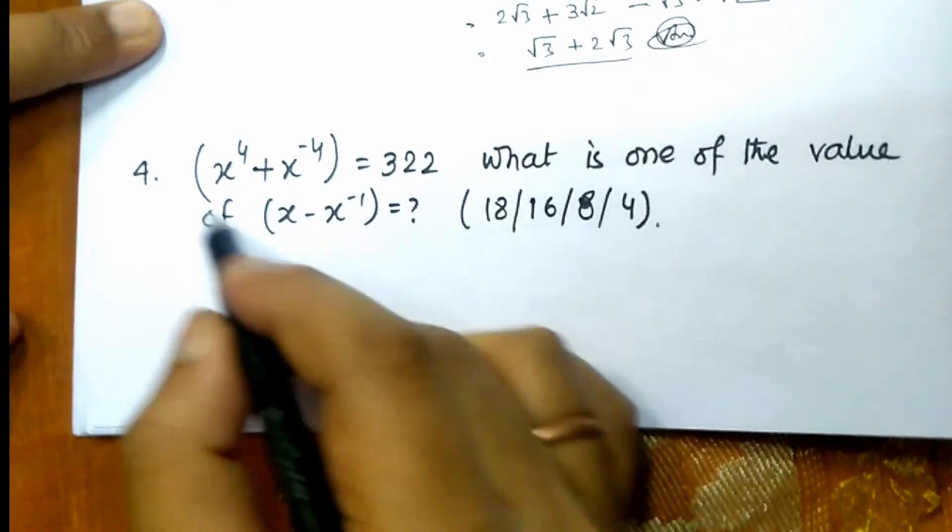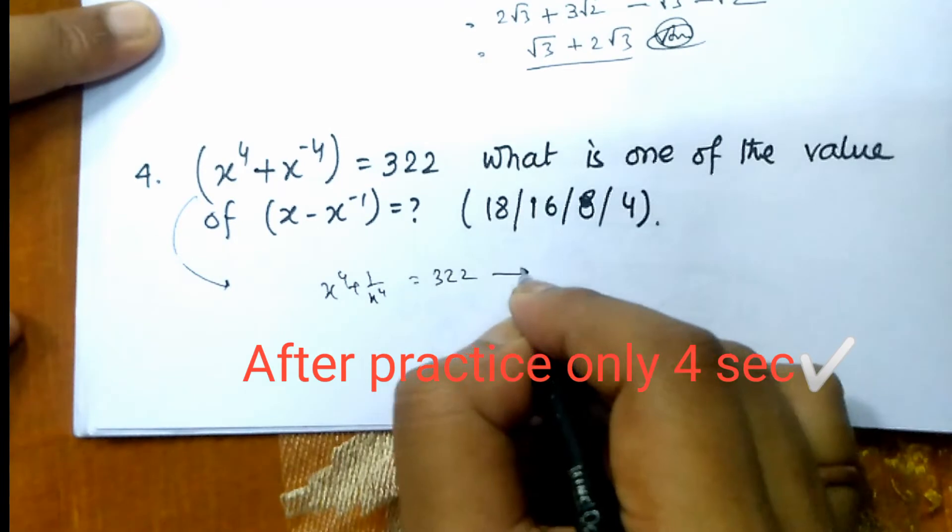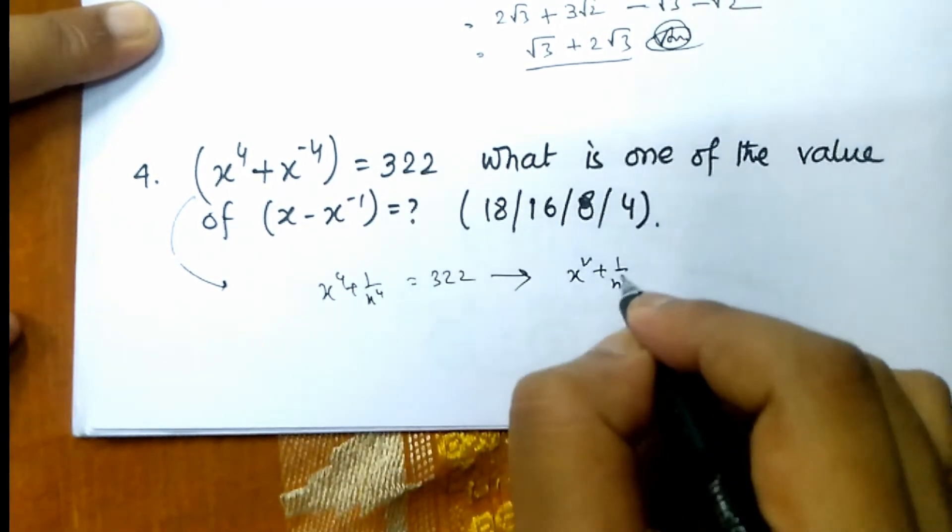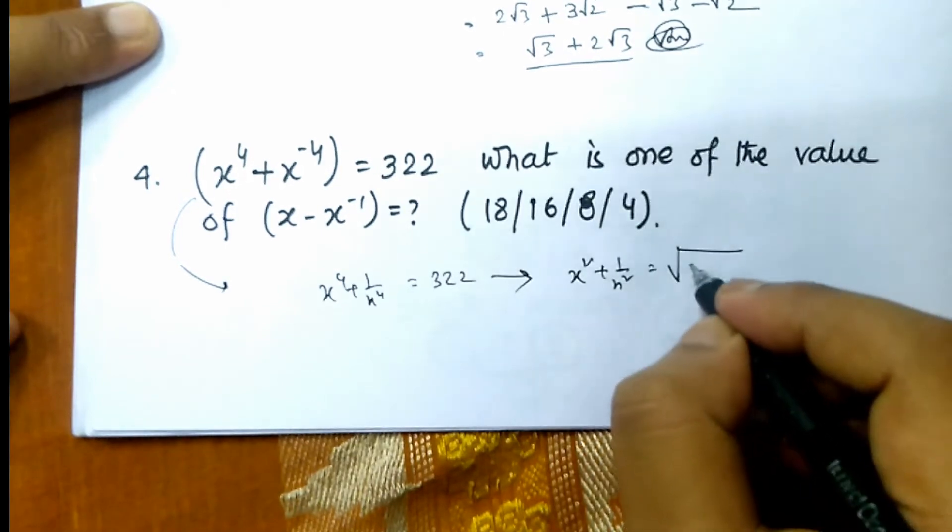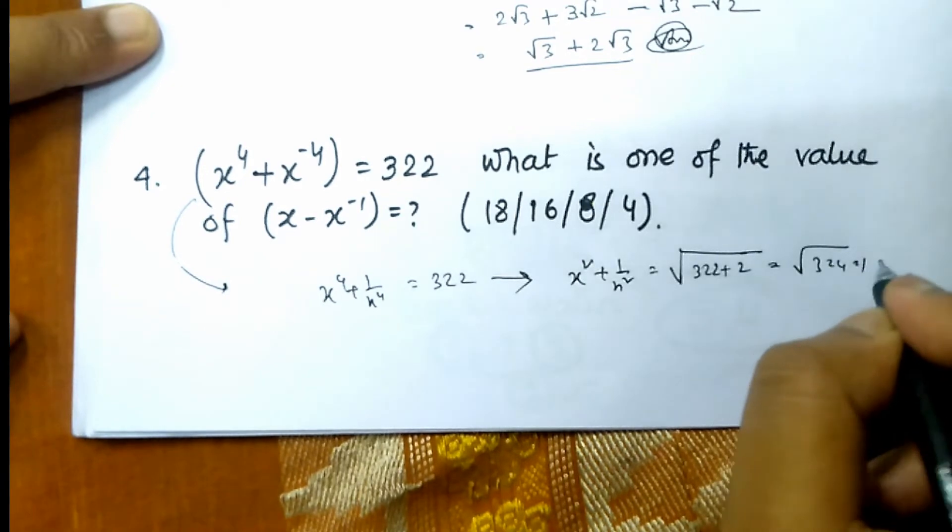Next. This problem: x4 plus 1 by x4 is equal to 322. We have to go one step lower. x square plus 1 by x square is equal to root over 322 plus 2. This is tricks. 324 is equal to 18.